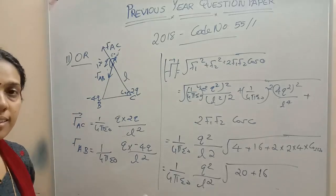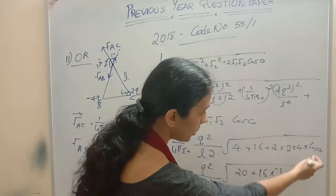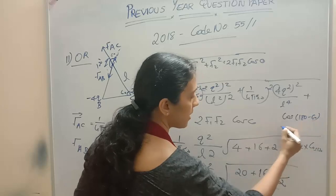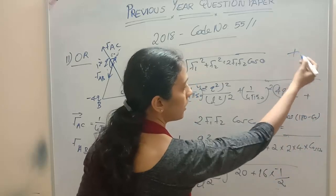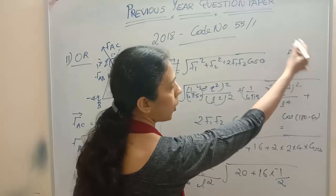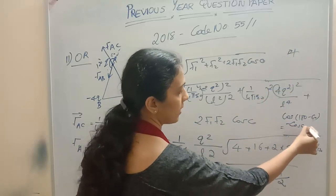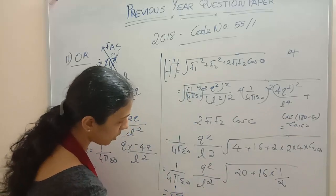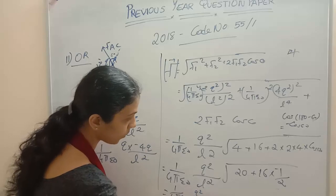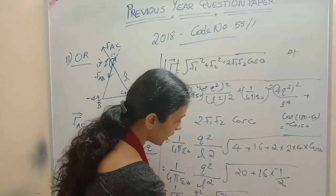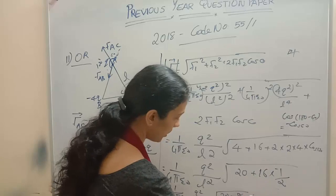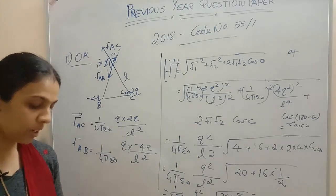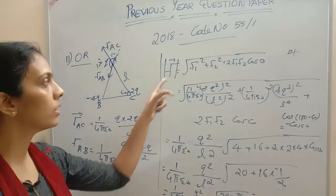So it is 1 by 4 pi epsilon 0 times Q square divided by L square, times square root of 4 plus 16 plus 2 times 16 cos 120. Cos 120 is cos (180 minus 60), so it is negative minus cos 60, which is minus 1 by 2. So inside the root we get 20 minus 8, which is root 12. So the answer is 1 by 4 pi epsilon 0 times Q square divided by L square times root 12.